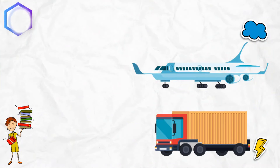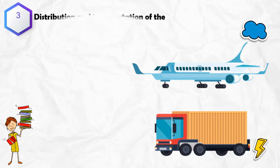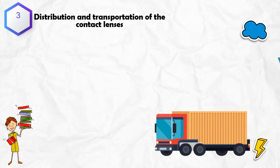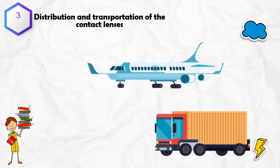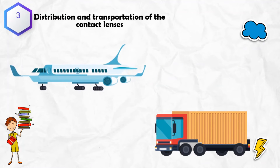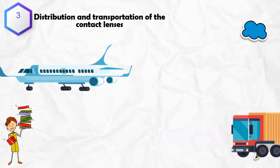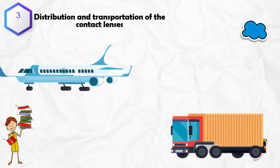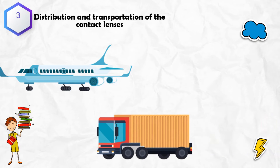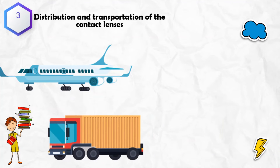Thirdly, the distribution and transportation of contact lenses. Contact lenses are most commonly transported by plane or truck, both of which rely on natural resources such as jet fuel, gasoline, or diesel.